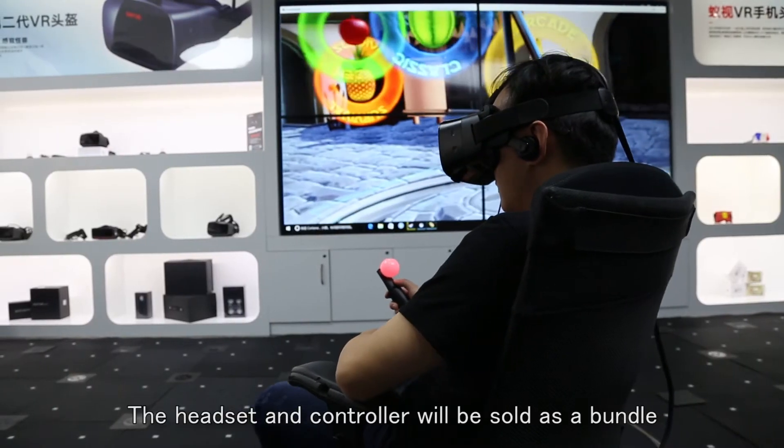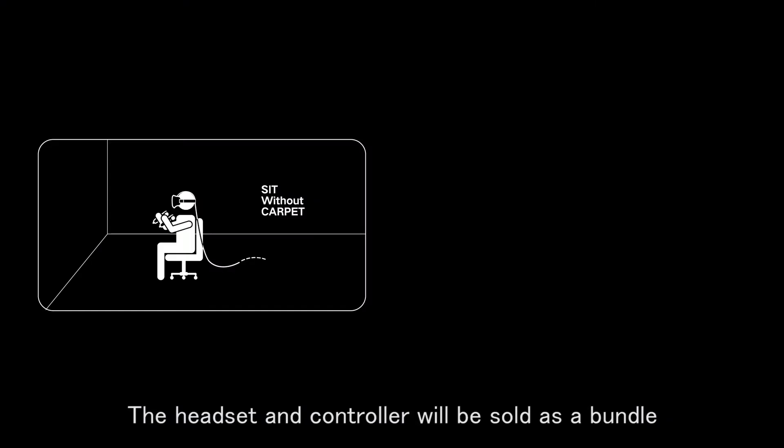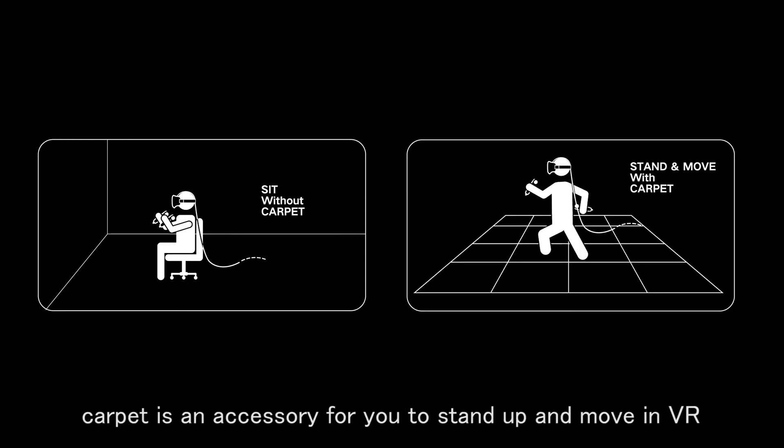The headset and controller will be sold as a bundle. And if you have enough room for VR, carpet is an accessory for you to stand up and move in VR.